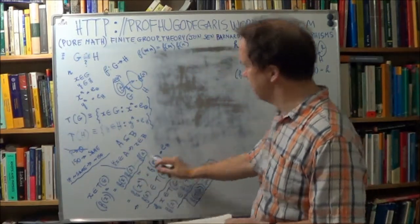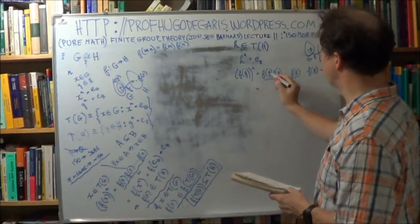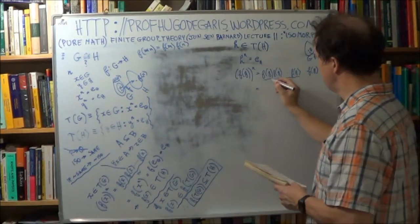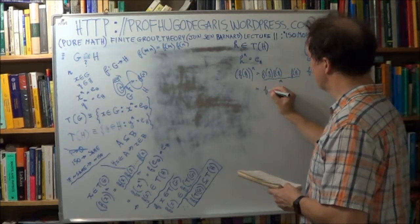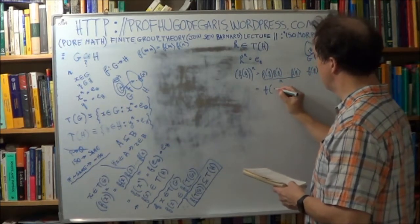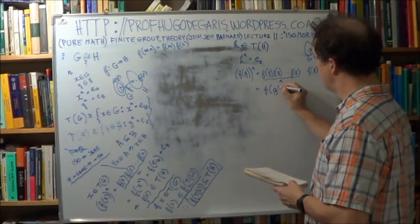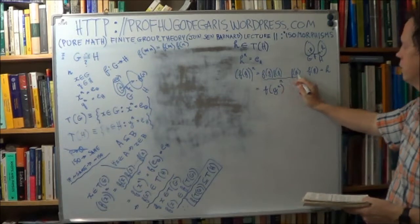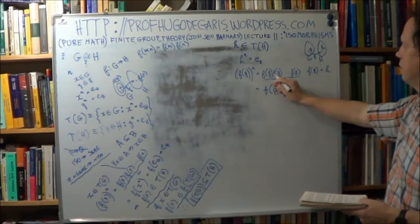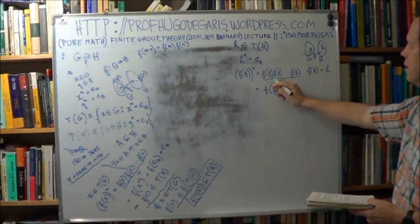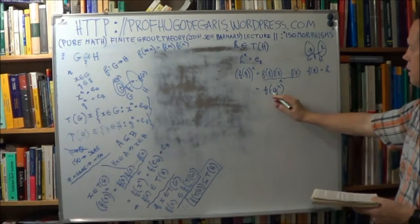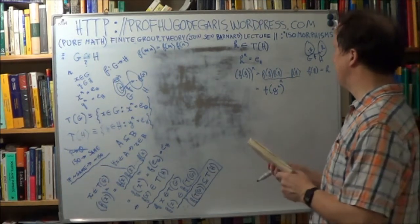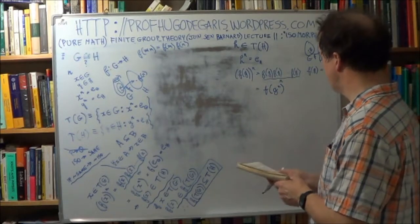It's the same argument as before, with the letters a bit different. So can you see that this will end up being F of g to the n? Because you've got this n times, so this will end up as F(g^n).